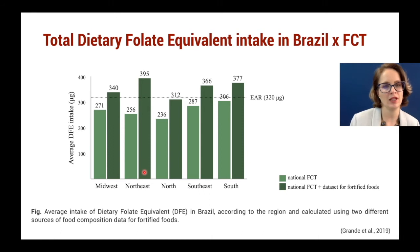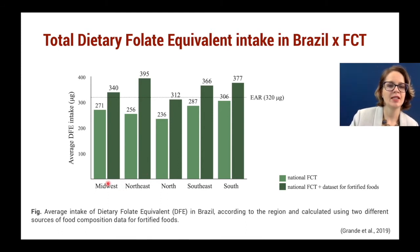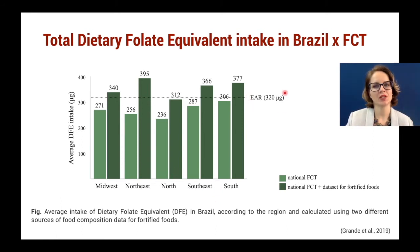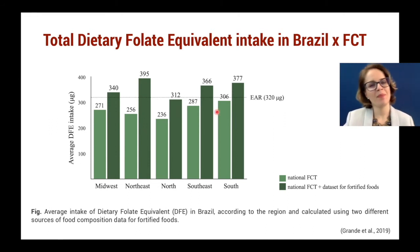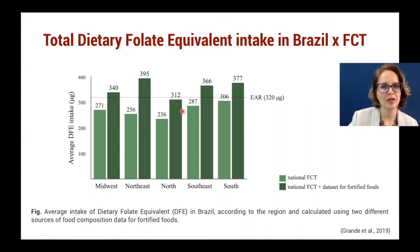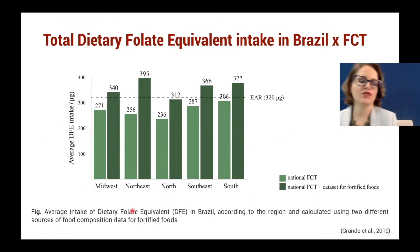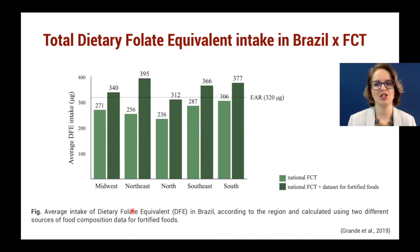In the light green columns, I used a national food composition table not adjusted for the fortification of flours in Brazil. In the dark green, the dataset was adjusted for fortified foods — all products containing fortified flours were adjusted according to the national regulation. The consumption, of course, was much higher when we used the adjusted dataset across all regions. Comparing the results with the estimated average requirement, we can see that without considering fortification, all regions had an average intake below the recommendation. But with the adjustments for fortification, only one region — the North — still had an average intake below the recommendation.